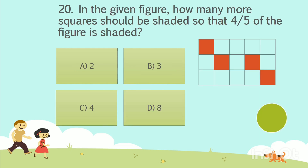Question No. 20. In the given figure, how many more squares should be shaded so that 4/5 of the figure is shaded? Option A: 2. Option B: 3. Option C: 4. Option D: 8. Your time starts now. The answer is Option D, 8.